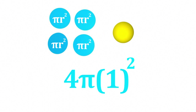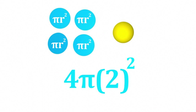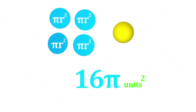So if we have a sphere of radius one unit, then its surface area is 4 pi r squared. If we have a sphere of radius two units, then its surface area is 16 pi r squared.